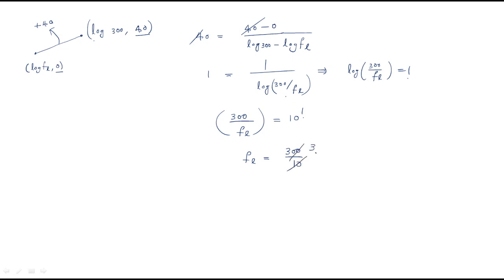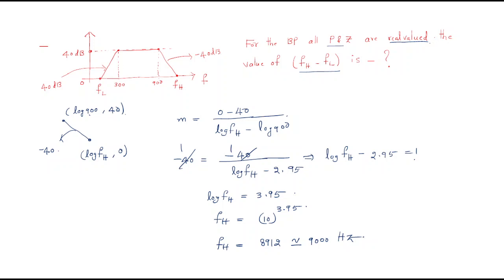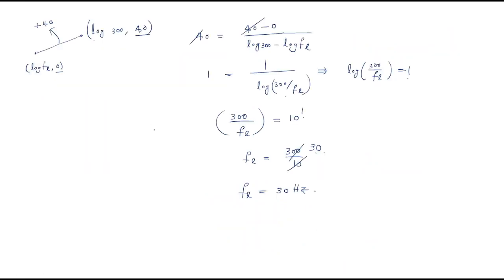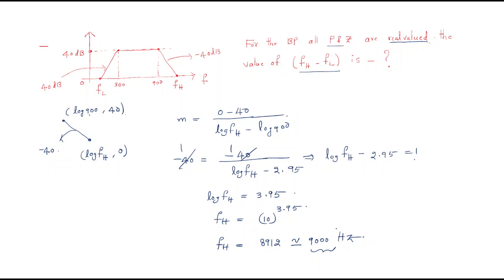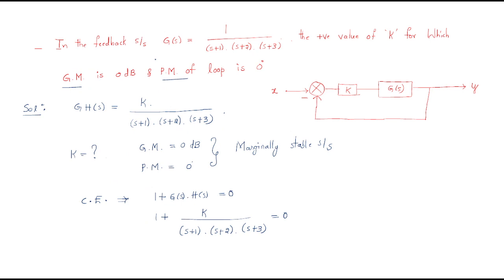So the lower frequency is 30 Hz and the higher frequency is 9000 Hz. Therefore fH − fL = 9000 − 30 = 8970 Hz. Whenever a problem asks for frequencies, follow the slope method — use the general slope formula and solve. These are the two important example problems. Thank you.